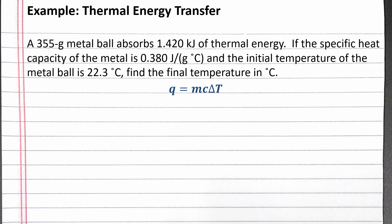We have to be consistent with units when using this equation. The specific heat capacity of the metal is given in joules per gram degrees Celsius, so we should use units of joules for heat, grams for mass, and degrees Celsius for change in temperature. Since thermal energy is being absorbed, heat is a positive value. If thermal energy was being released by the metal ball, we would have needed a negative value for heat.